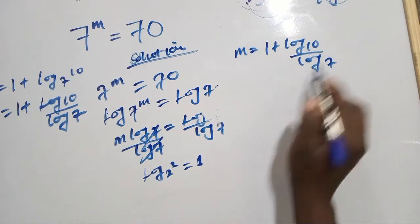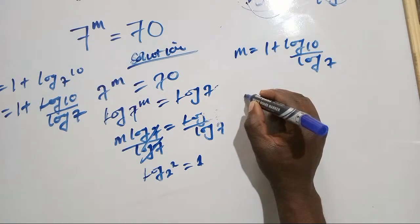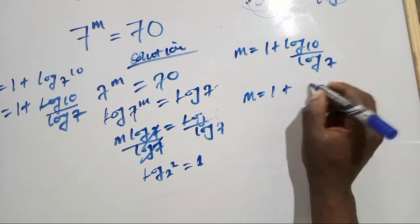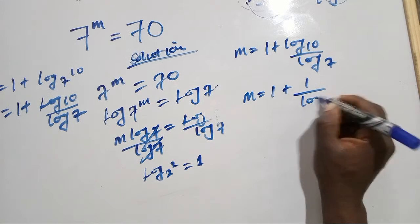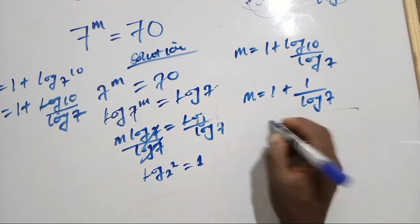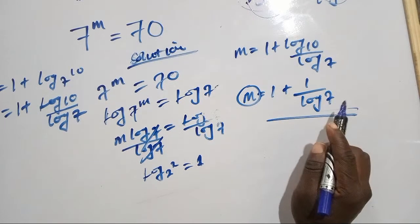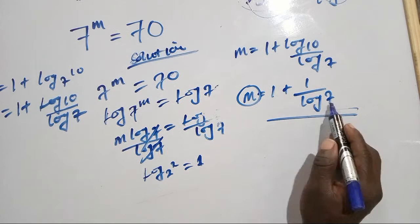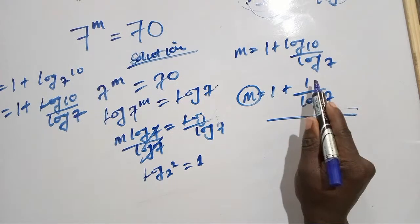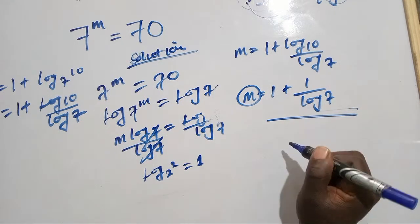If you punch on a calculator, log 10 is 1. So we have m equals 1 plus 1 over log 7. This is the answer for m. If you want, you can punch on a calculator to find log 7, divide 1 by it, and add 1, then you'll find the answer.